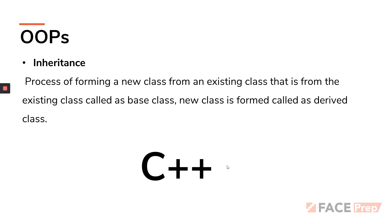That's it. I hope you have understood the four basic things when it comes to object-oriented programming concepts. In the next video, as I told you, I'll be discussing classes and objects and how to implement all four of these concepts using classes and objects specifically in C++. I hope you are able to understand this, and let's do a lot of experimentation based on these concepts.